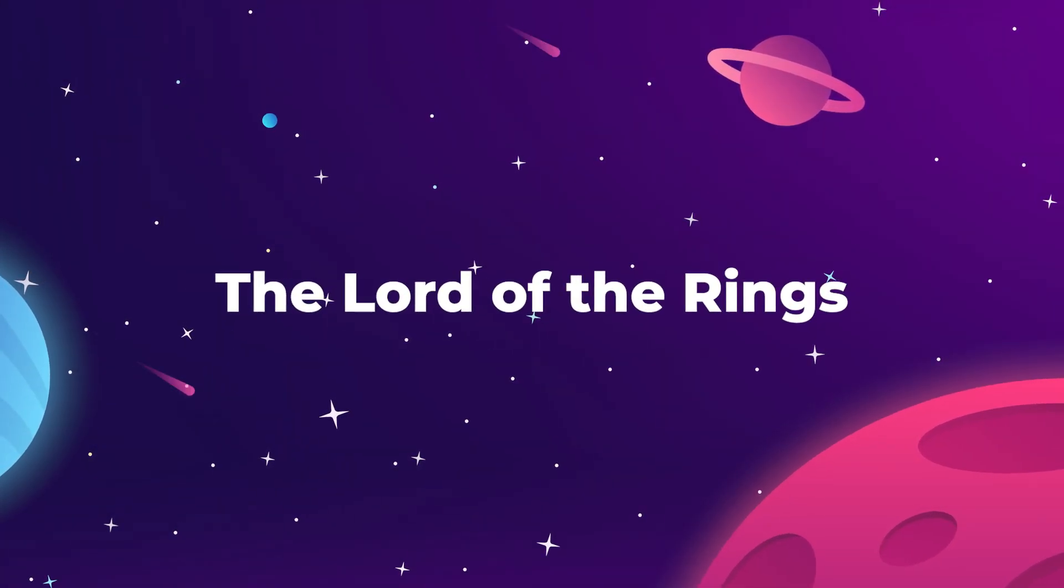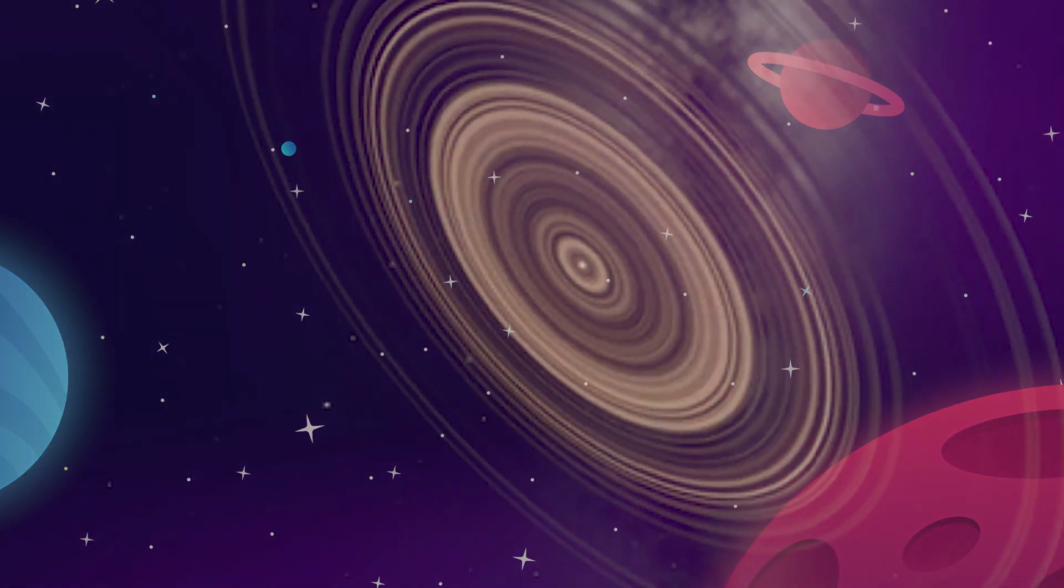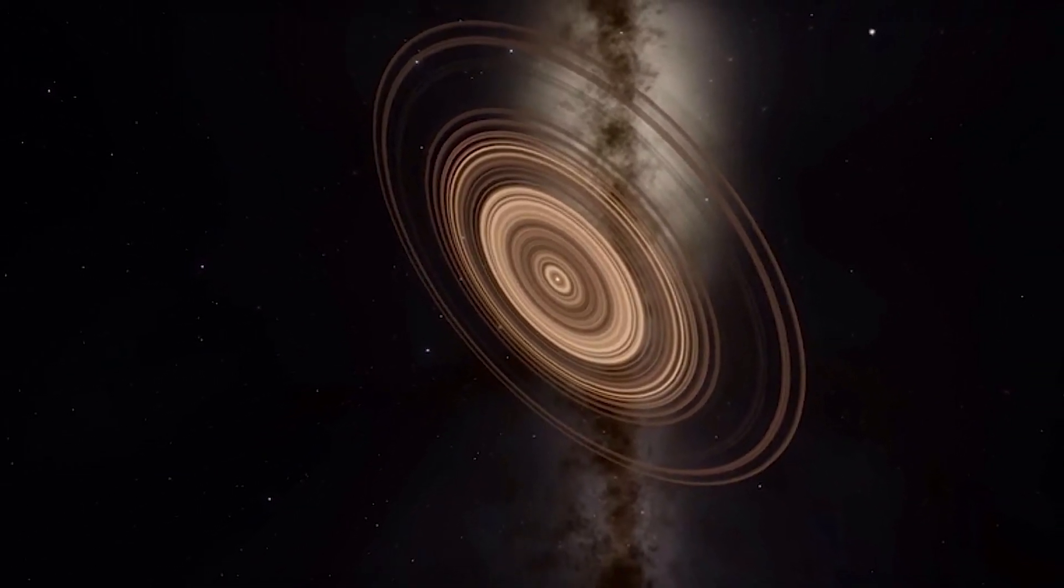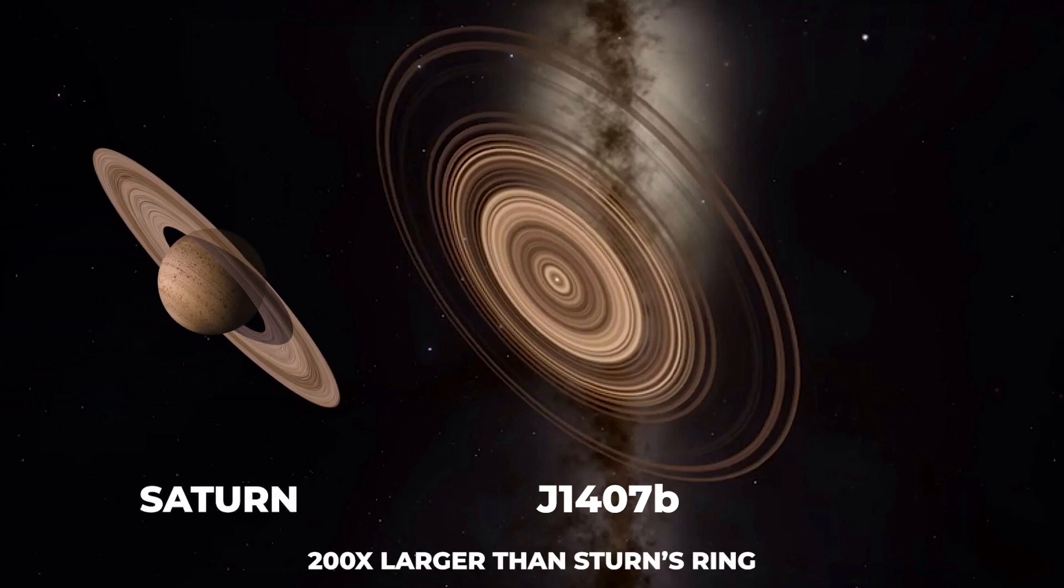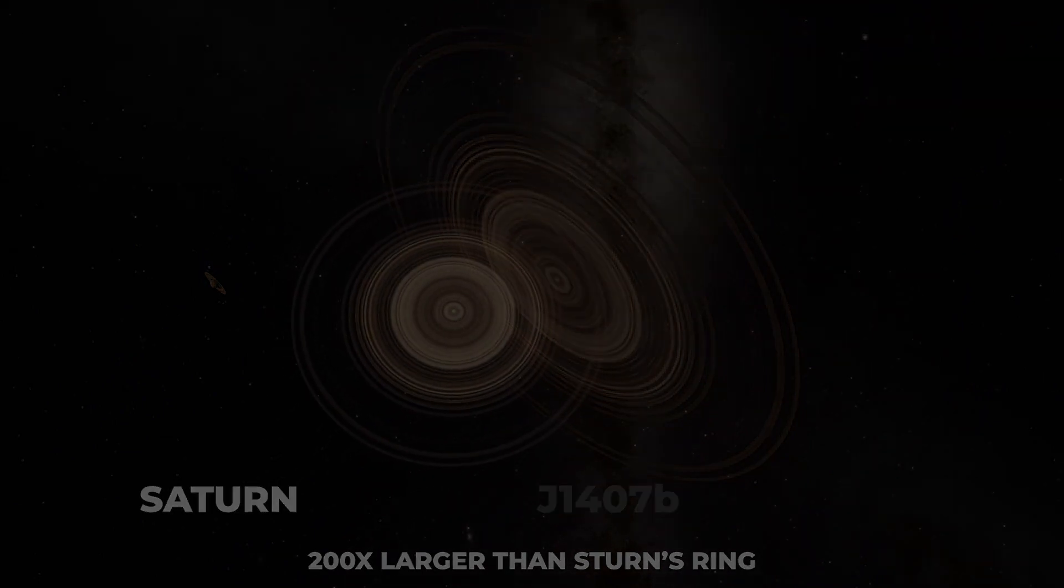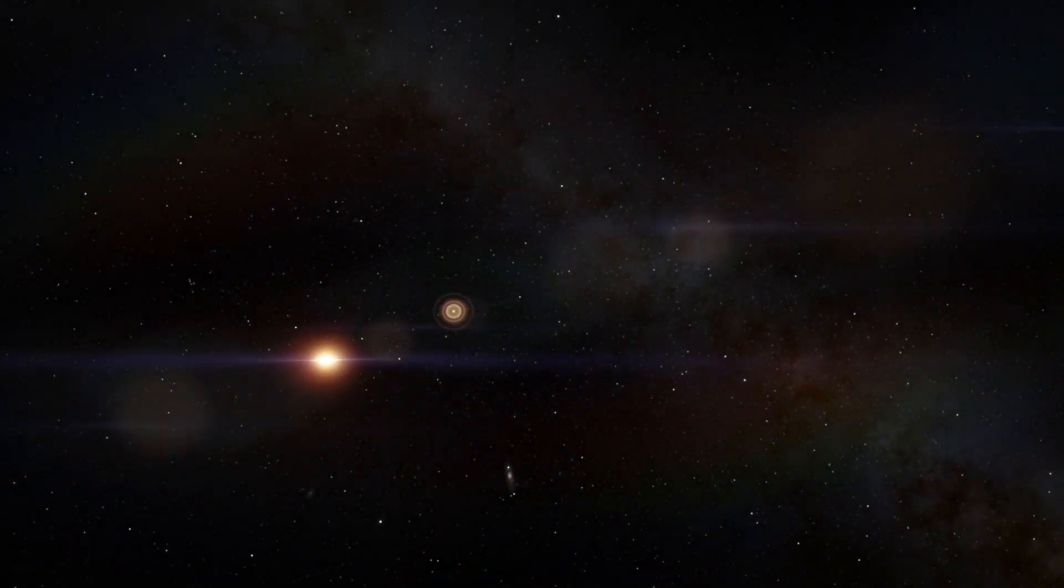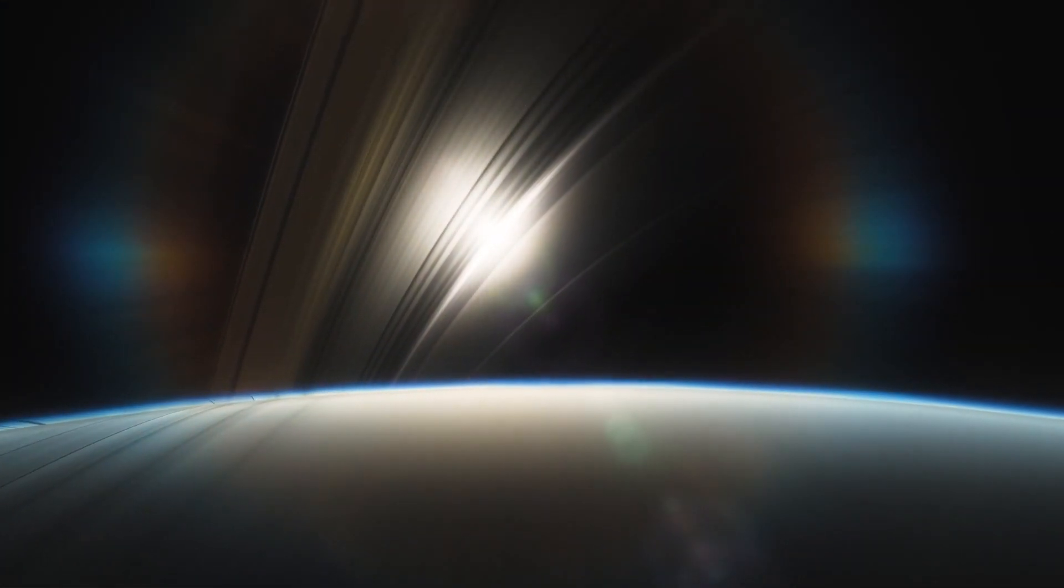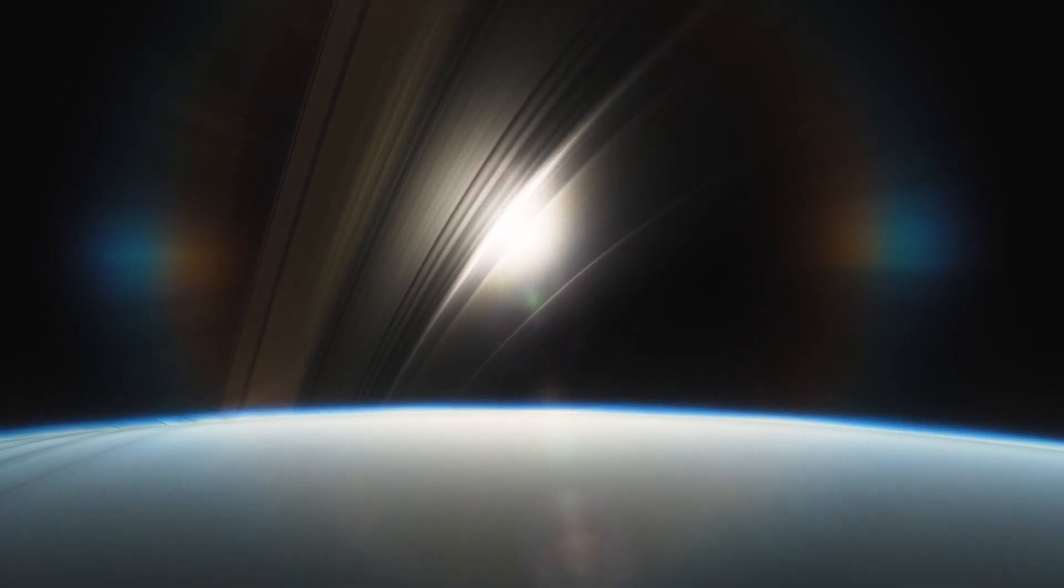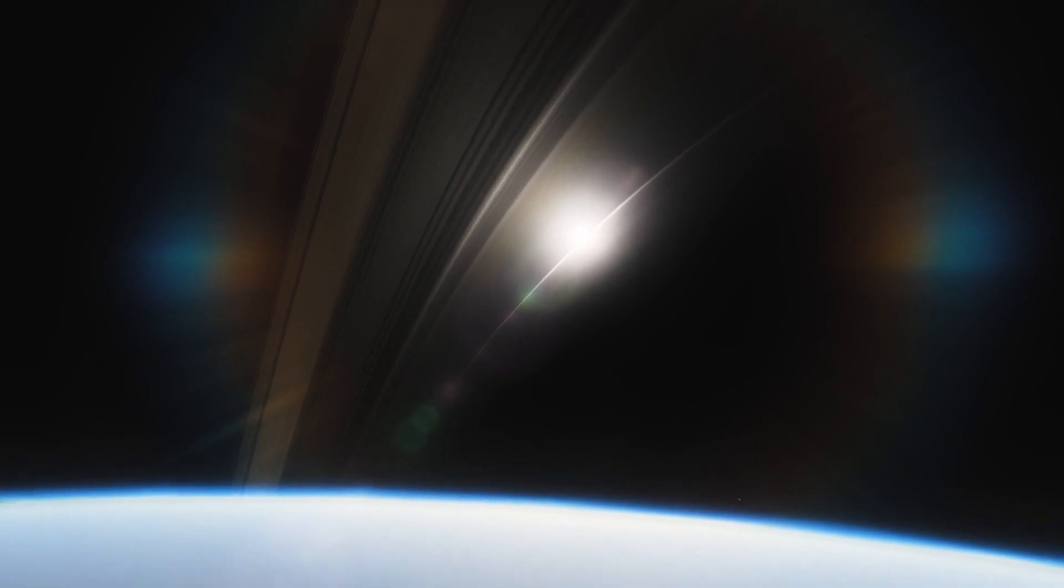Let's start off with an exoplanet known by the underwhelming title of J1407b. I'm going to go with the Lord of the Rings here because this gas giant has a ring system that is 200 times larger than the ring around the planet Saturn. This super Saturn is located 433.8 light years from Earth in the constellation of Centaurus, and we are able to detect these rings from so far away by measuring the amount of light from the host star as the planet passes in front of it.